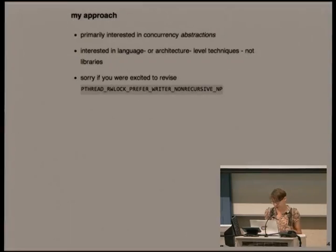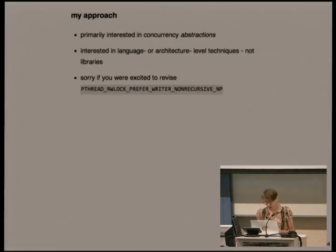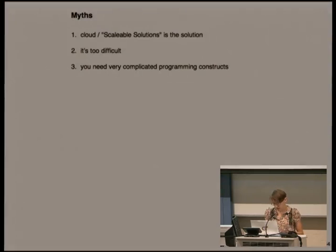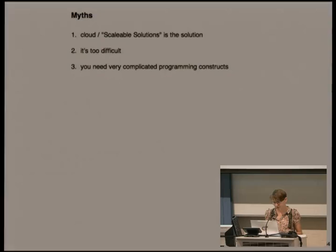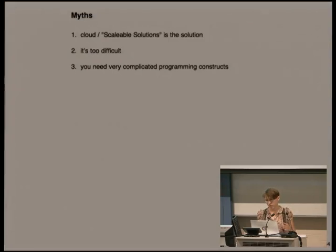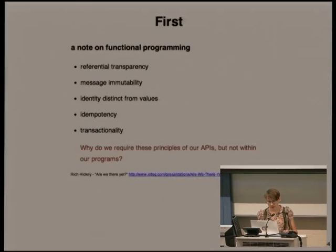My approach is really to think about concurrency abstractions — what you can do at the level of what the language actually offers you, rather than what a library can do. I don't think anyone should be using something like the Pthread API with what we have now. A few myths I want to counter: first, that the cloud or purely horizontal scalability can solve certain problems; second, that it's too difficult for most programmers to start approaching things concurrently; and third, that it requires really complicated programming constructs.